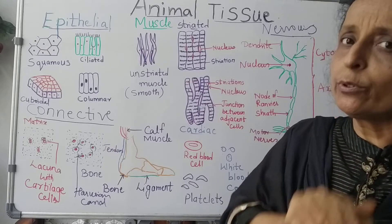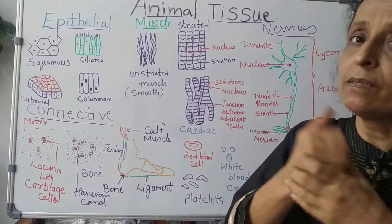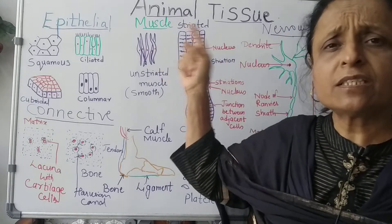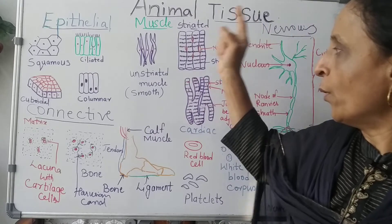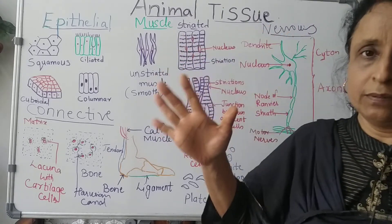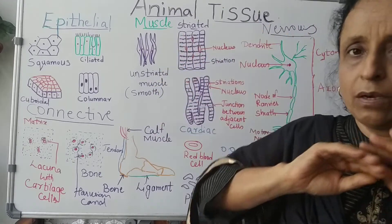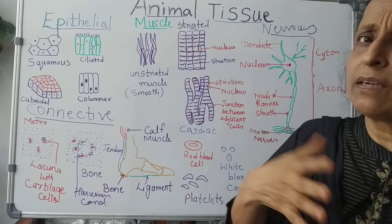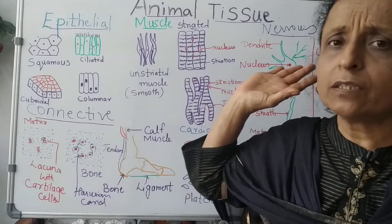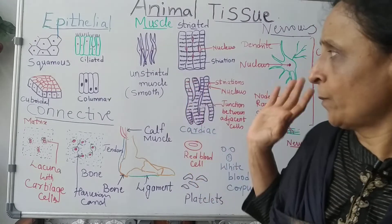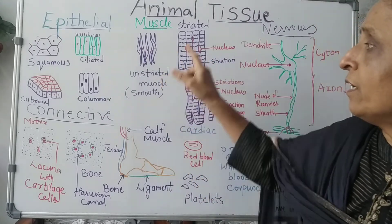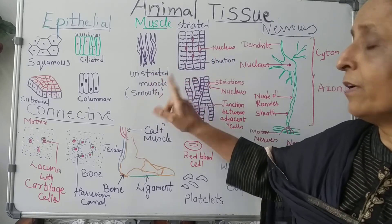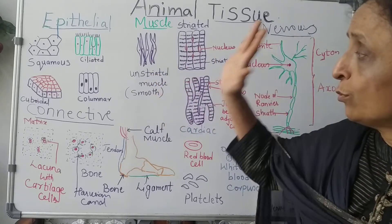Under the skin you can see that muscle is present. What types of muscles are present in our body? The smooth or unstriated muscles are not under our control. They are present in various systems like the digestive system — we cannot stop them. They do not have striations, so they are known as unstriated or smooth muscles.